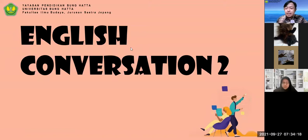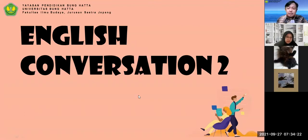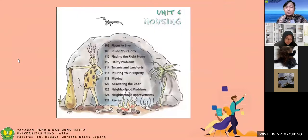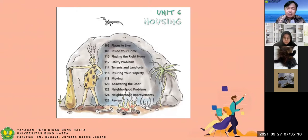So you downloaded the material from the portal, right? Good. I hope that you have read the list of vocabulary and the pictures, so it's quite easy for us to practice the conversation. Although you are Japanese Literature Department, you are still learning English. This is Unit Six: Housing. Last week we discussed places to live, inside your home, finding the right home, utility problems, and tenants and landlord.